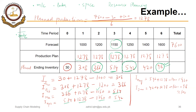We have to consider the resources and capacity required to execute the plan. At the end of our discussion on the different production strategies — level, chase, and hybrid — we will see how to match our production plan with resource planning, covering machinery, labor, space, and other capacity aspects. In the next segment, we will discuss the chase production strategy. Thank you very much.